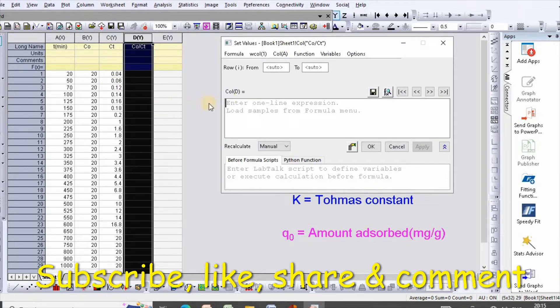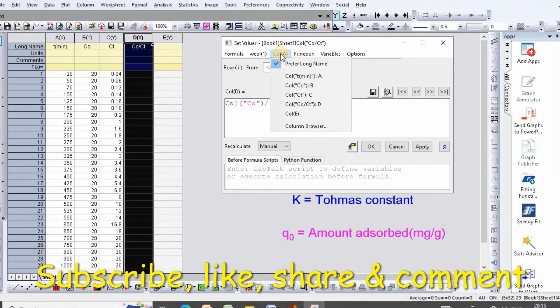Which is add column B, C0/Ct, divided by column C. Then apply.